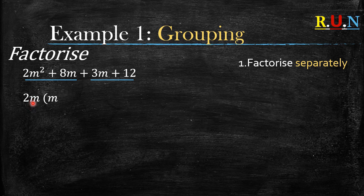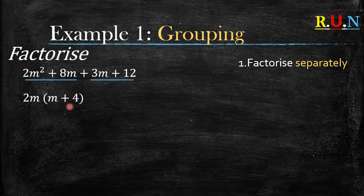Now we start dividing. 2m² divided by 2m equals m, because two divided by two gives one and m squared divided by m is m to the power one. Then 8m divided by 2m gives us positive four, because the m's cancel out and eight divided by two is four.